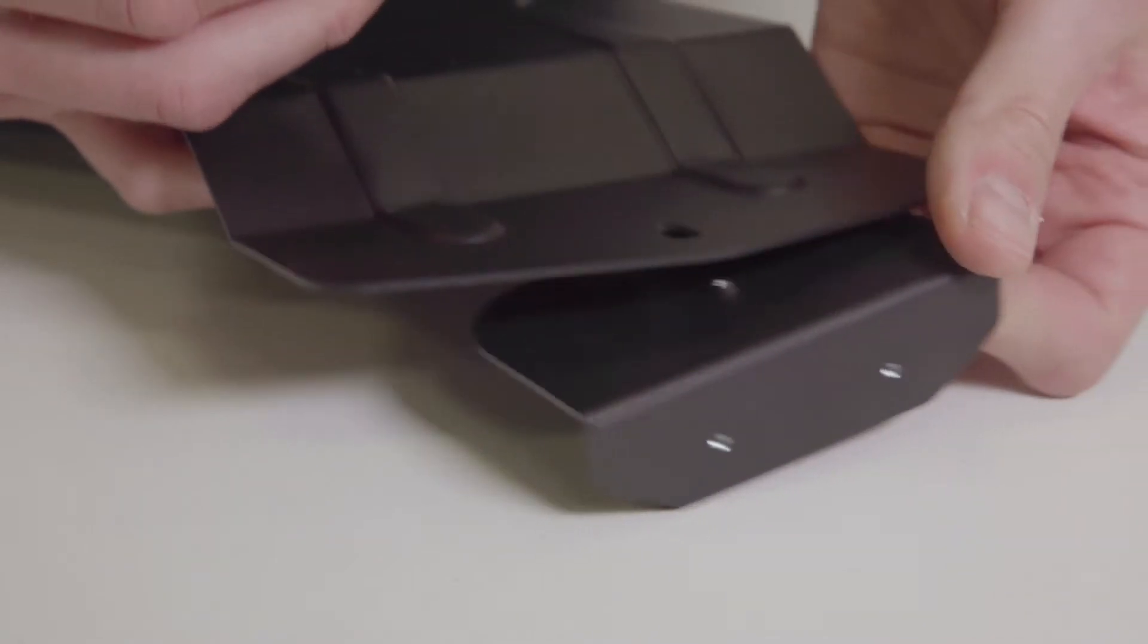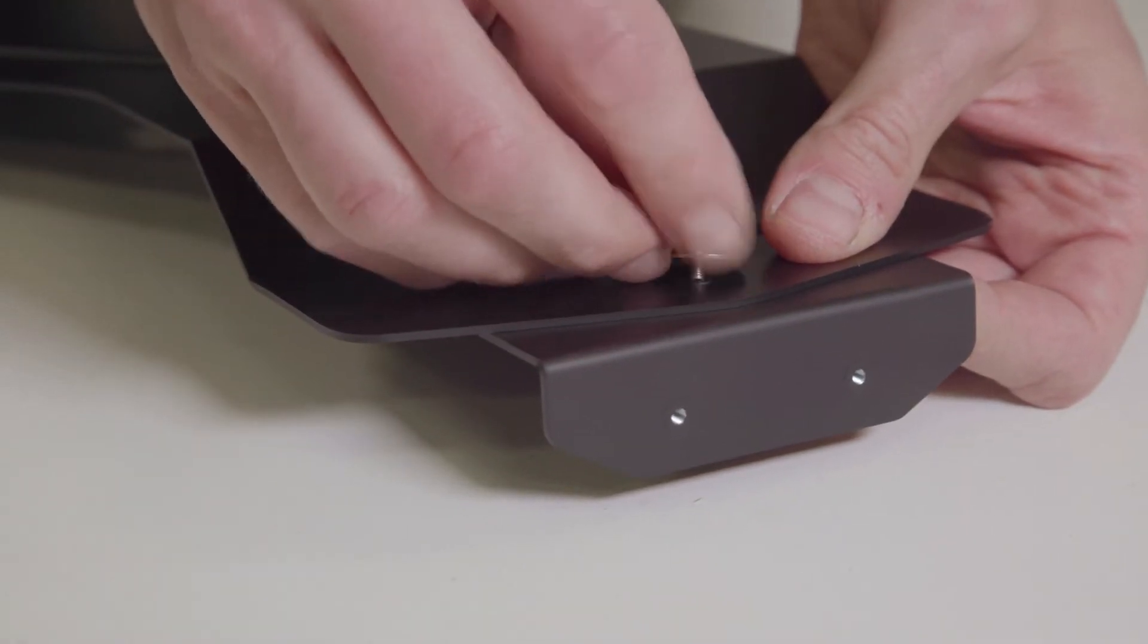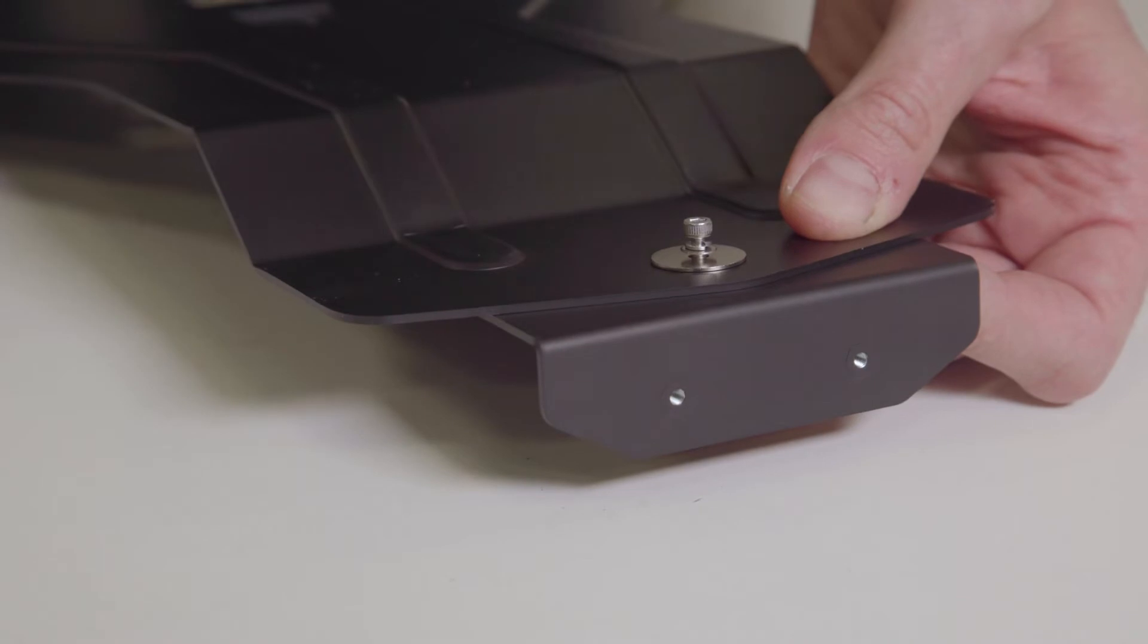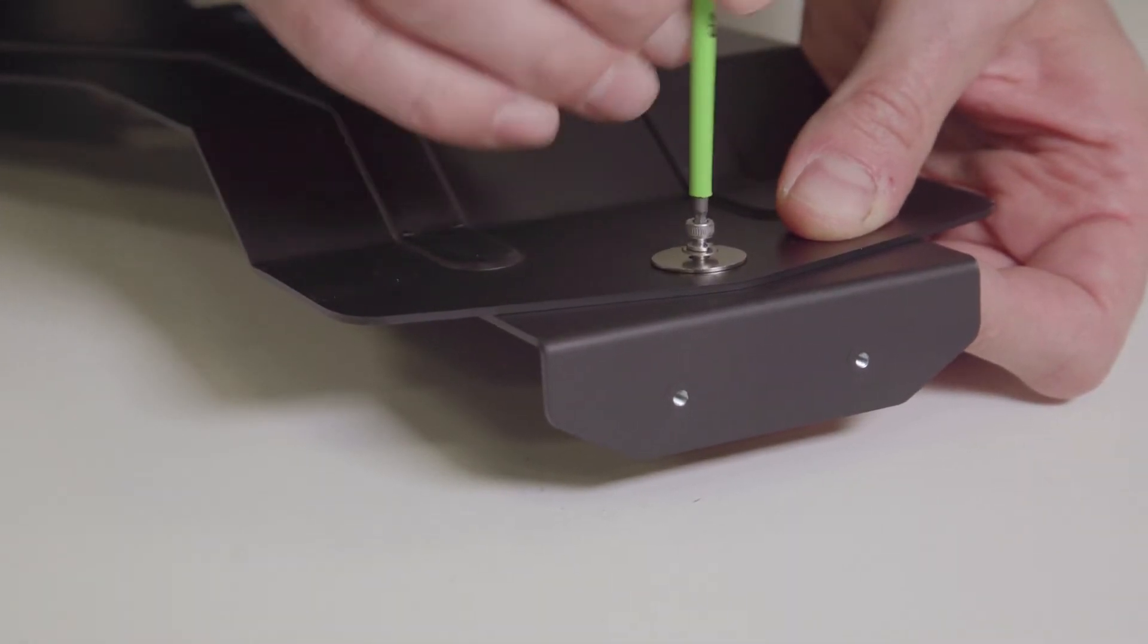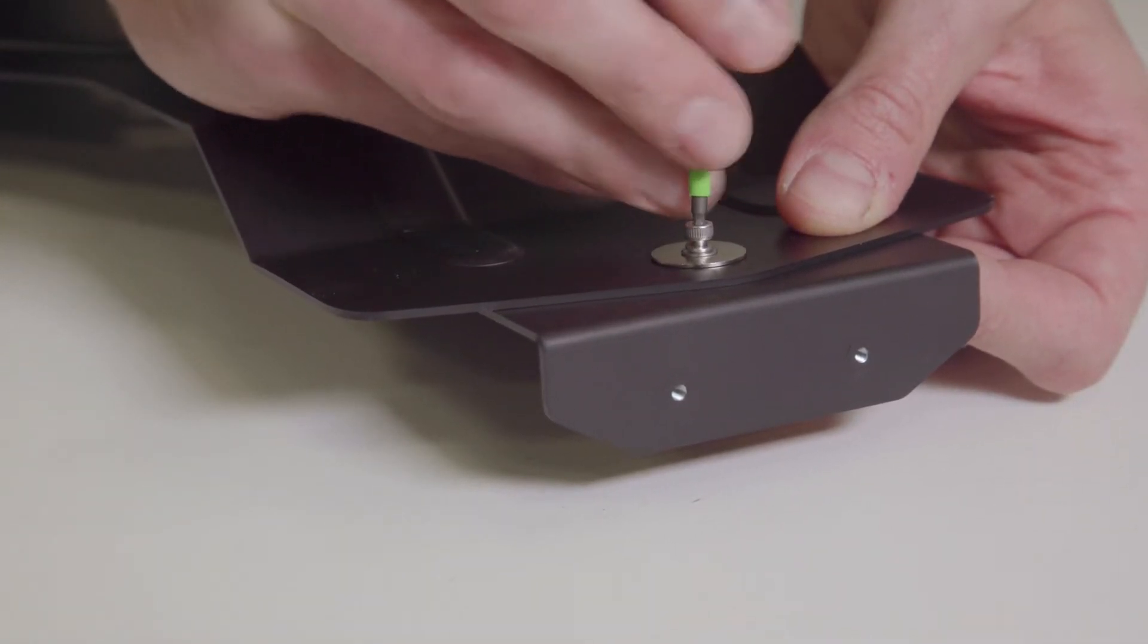From here fit the angle bracket to the lens support bracket by using an M3 X8 screw and one M3 washer. Do not fully tighten the screw as further adjustment will be required later.